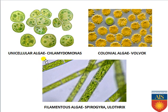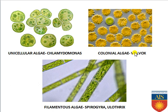Here you can see three different types of algae: unicellular, colonial, and filamentous. The example of unicellular algae is Chlamydomonas. The example of colonial algae is Volvox. For filamentous algae, examples are Spirogyra or Ulothrix. The diagram of Spirogyra is given; Ulothrix is not shown.